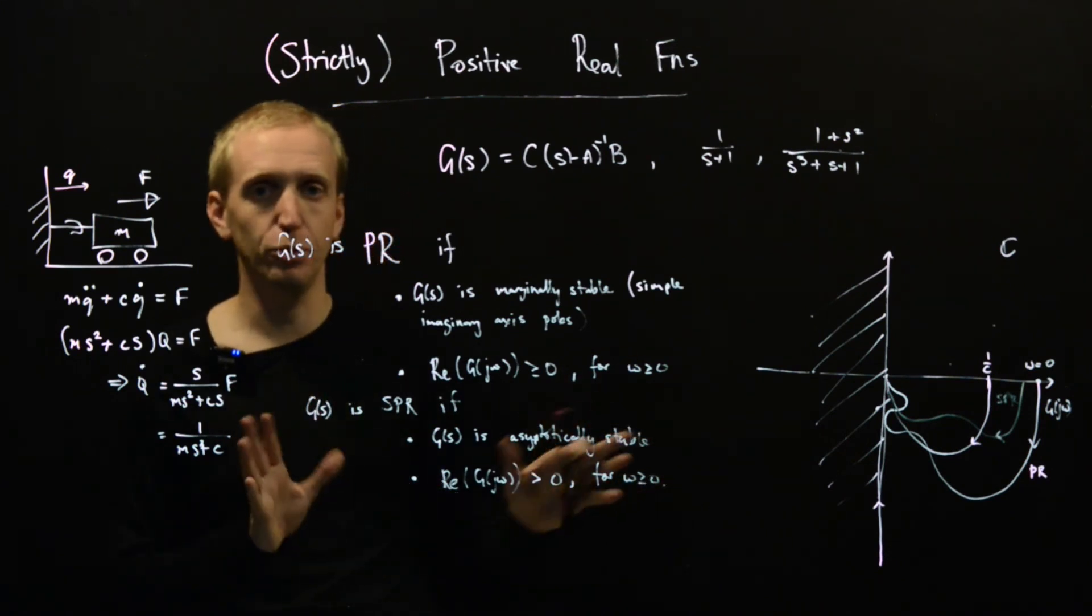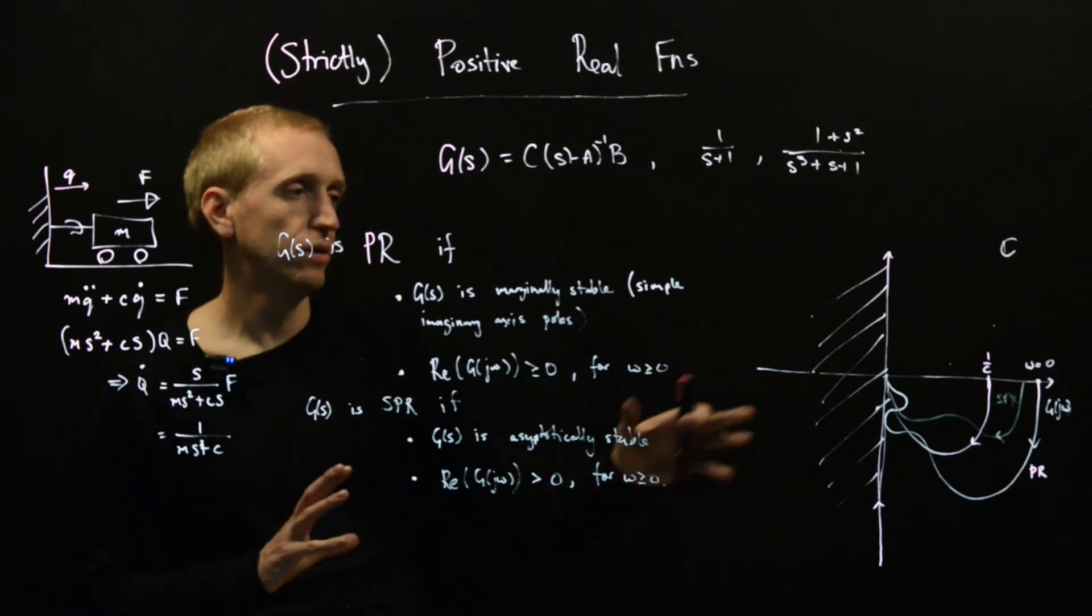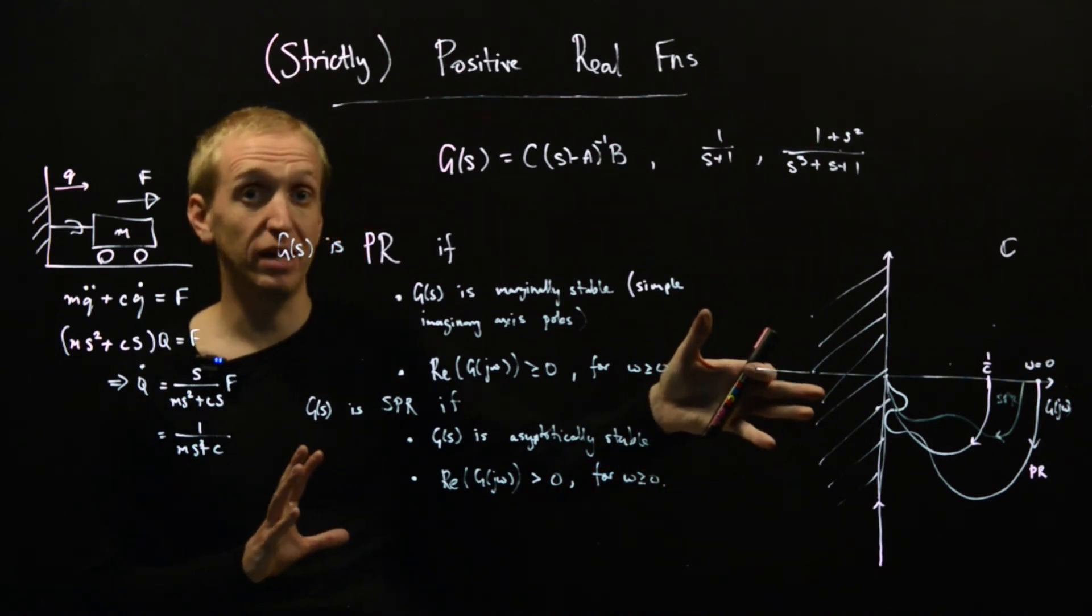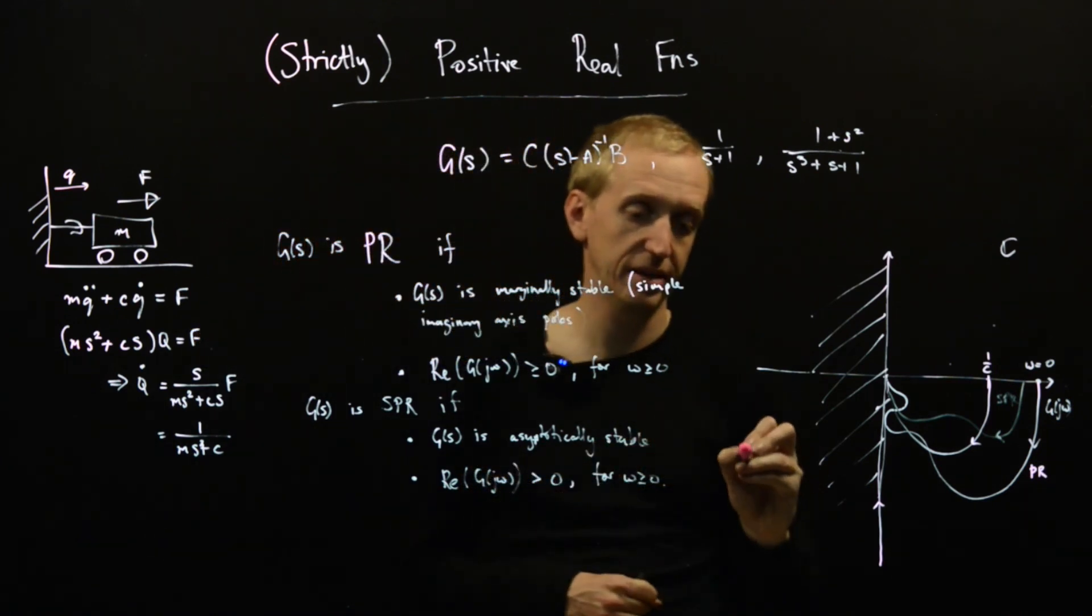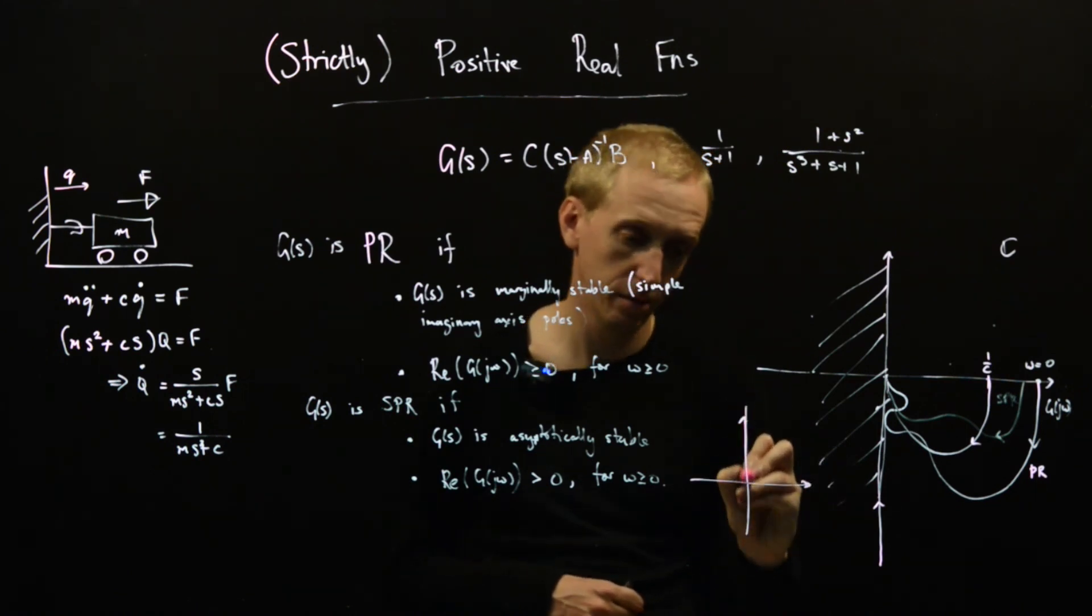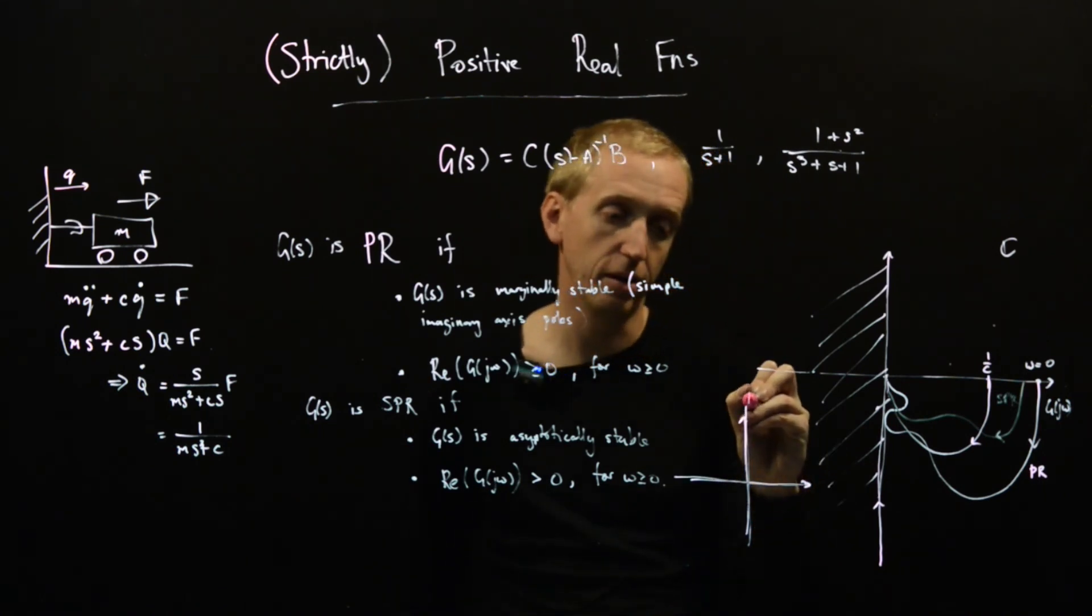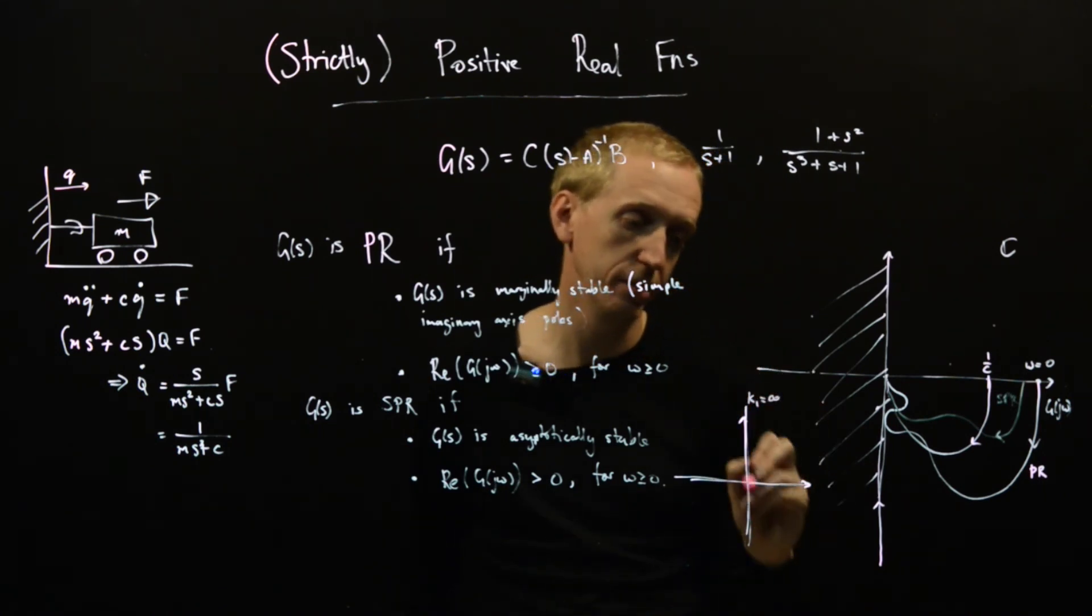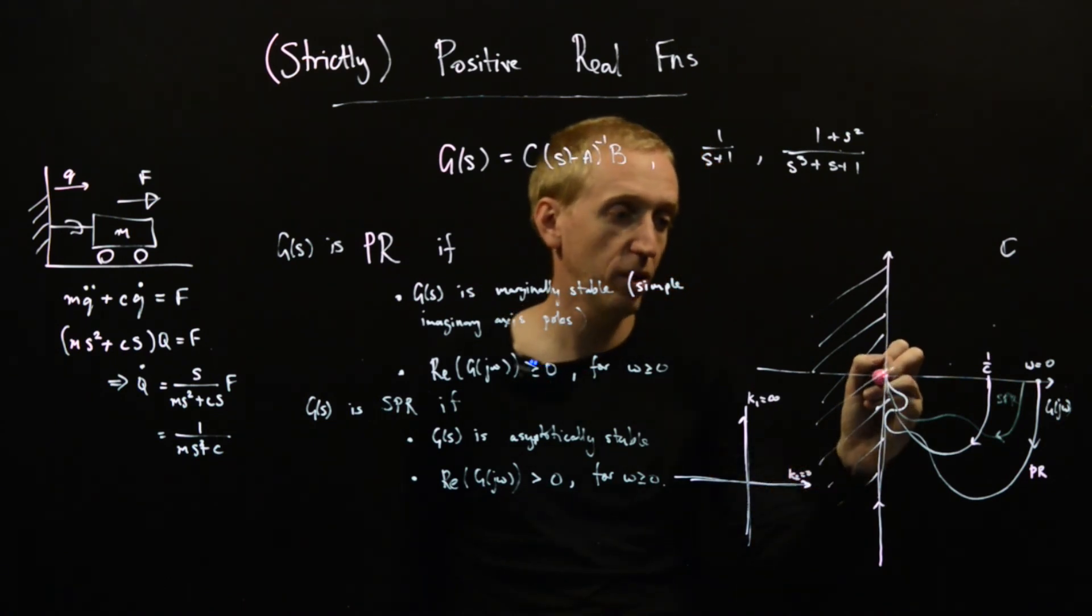So how do we connect this to what we're seeing so far? Well, we're actually already seeing an extreme case of the circle criteria. And this is corresponding to the case that our non-linearity is lying in the following sector here. So our slope k1 is infinite and our slope k2 is equal to zero. So our one over k1 point is here. Our one over k2 point is off to infinity.